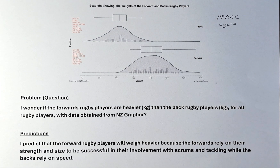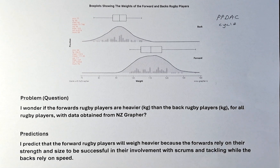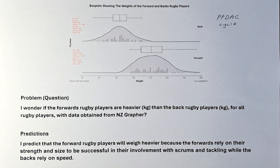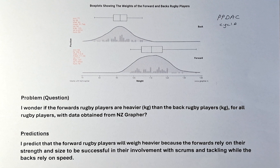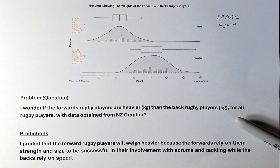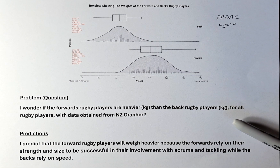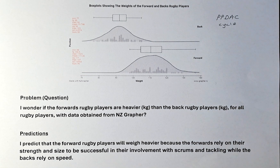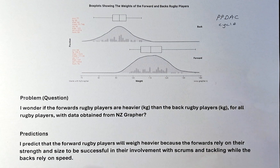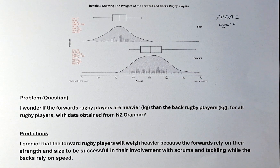We are going to learn how to create the question. The question sounds like this: "I wonder if the forward rugby players are heavier or lighter in kilograms than the back rugby players in kilograms." You need to state the population for all rugby players with data obtained from wherever you get the data from — it could be New Zealand Graffer, Census at School, or any other data set that you are given.